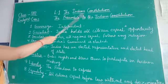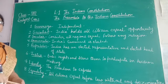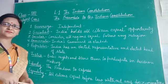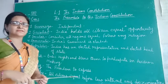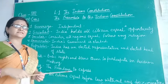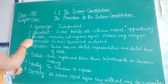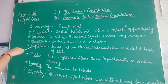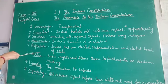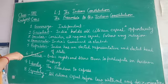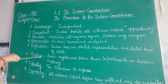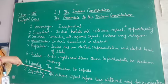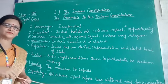The preamble of the Indian Constitution is an introductory statement, and it describes India as a sovereign, socialist, secular, democratic republic. Some other words also described here are justice, liberty, equality, and fraternity.